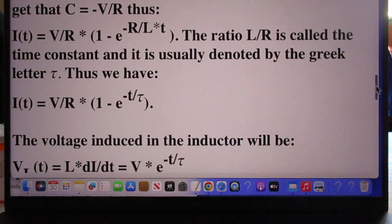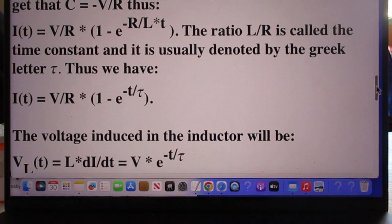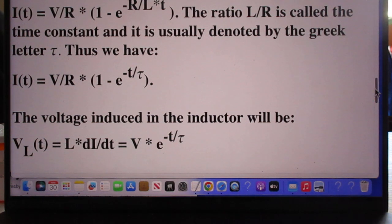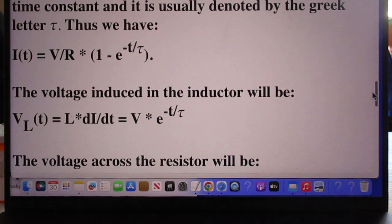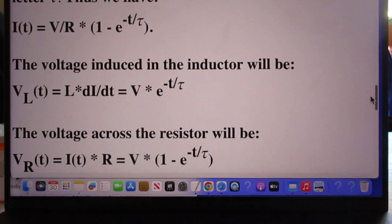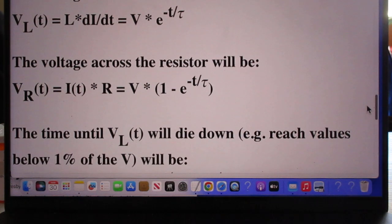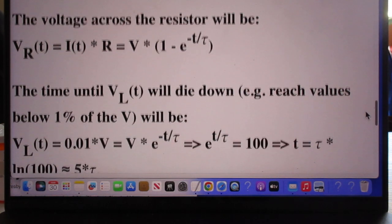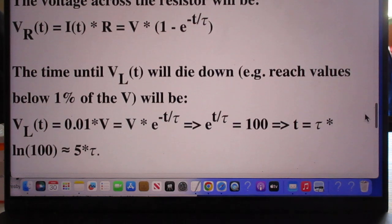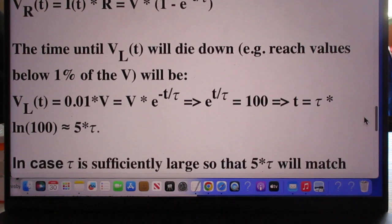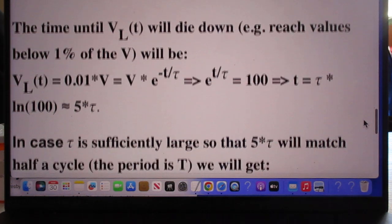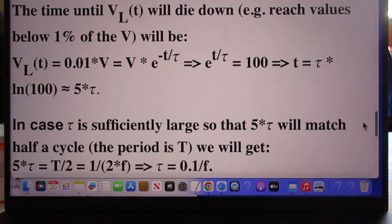L over R has the dimension of time and L over R is called the time constant, and is usually denoted by the Greek letter tau. L over R is now, it's a lot of different things.